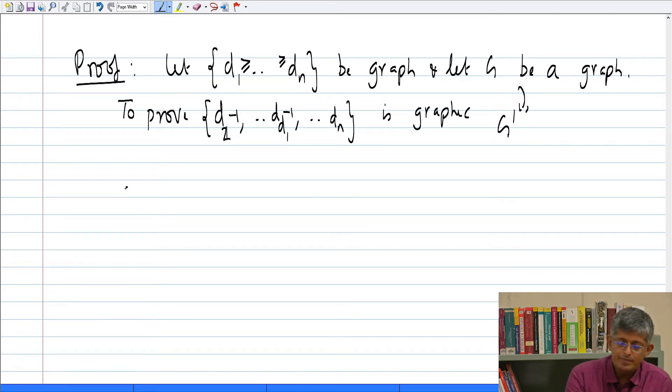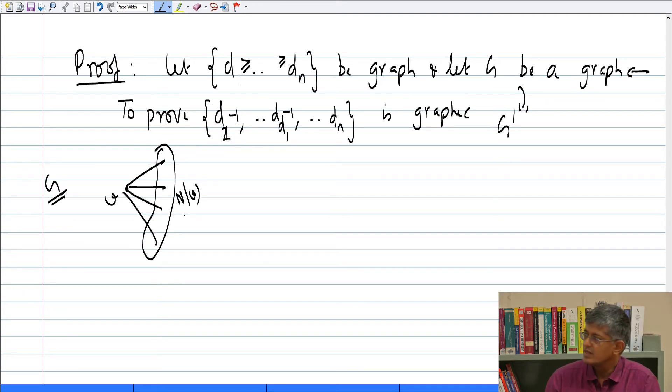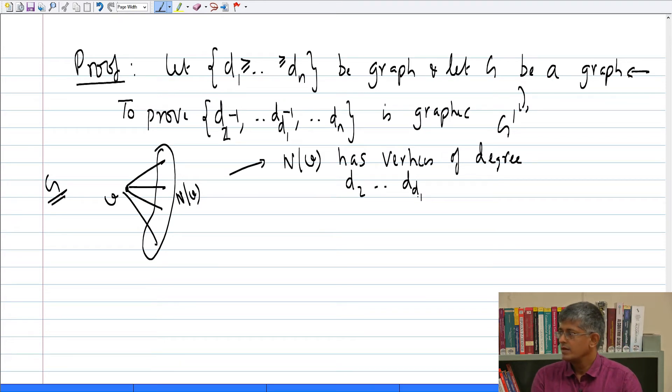So, what is the idea? Look at a vertex V, its degree is the maximum degree in the graph G. Consider G, which is given by the premise, the starting hypothesis. That G is a graph with exactly that degree sequence. Fix a vertex V here, the degree of V is d1, which is the maximum degree. This is N of V.